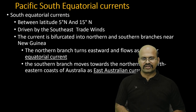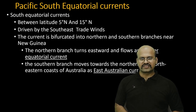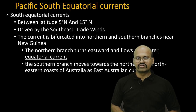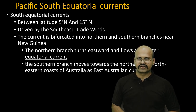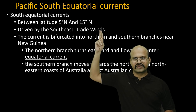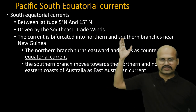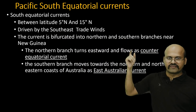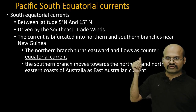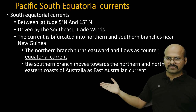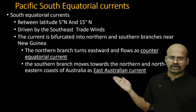The Pacific South Equatorial Current flows very close to the equator compared to the North Equatorial Current and is driven by southeast trade winds. The current bifurcates into two parts: the northern part joins the counter equatorial current in the Pacific Ocean, while the southern part forms the East Australian Current.